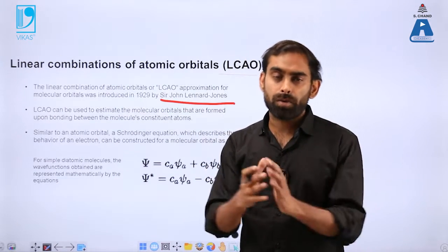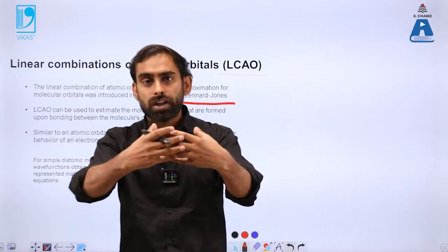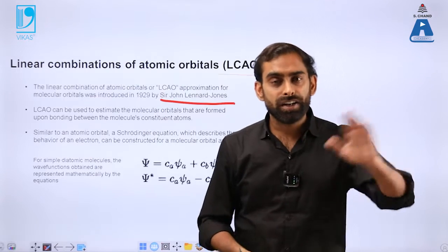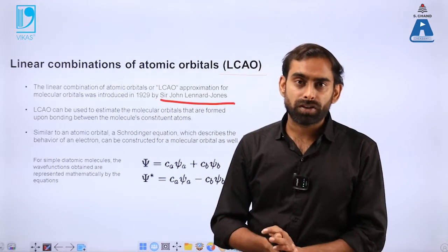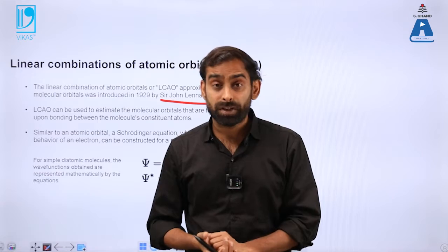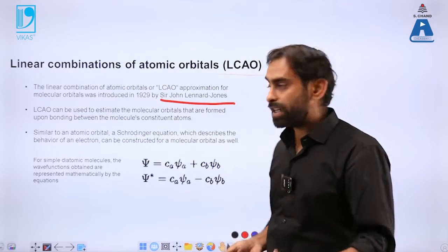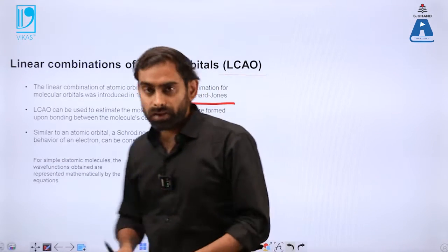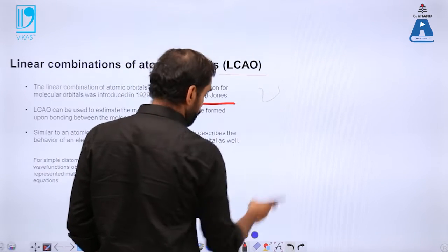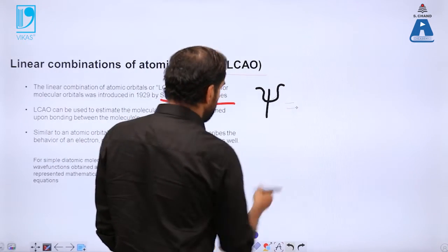The Linear Combination of Atomic Orbitals is a mathematical feature which uses the Schrödinger equation and explains how atomic orbitals combine to form molecular orbitals. The key idea is that when two atomic orbitals come close to each other they combine linearly. A linear combination means that if there are two waveforms they will combine by simple addition. The molecular waveform, represented by the Greek letter psi (ψ), can be represented by individual waves of specific atoms.